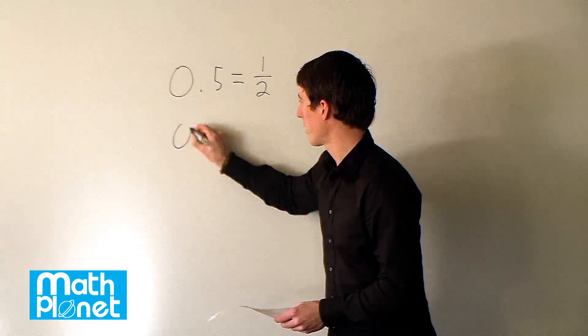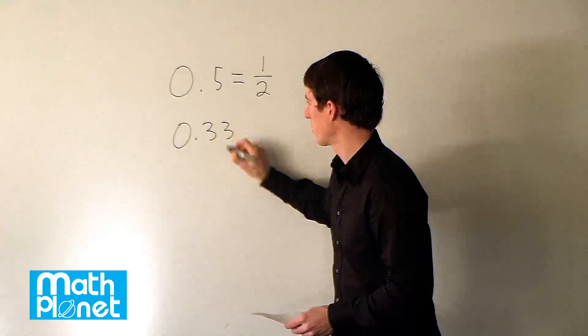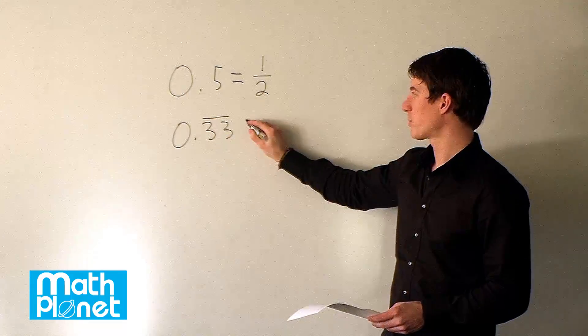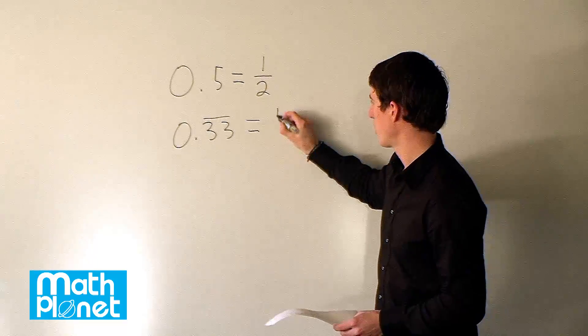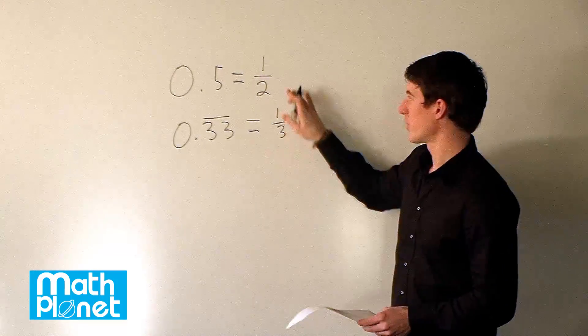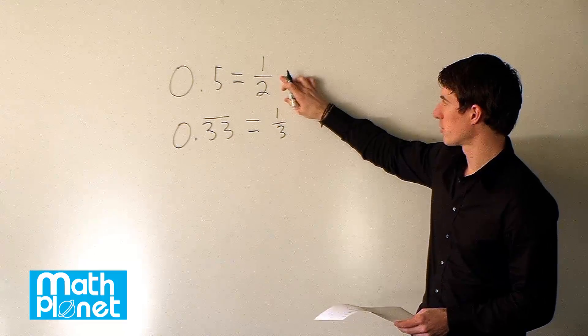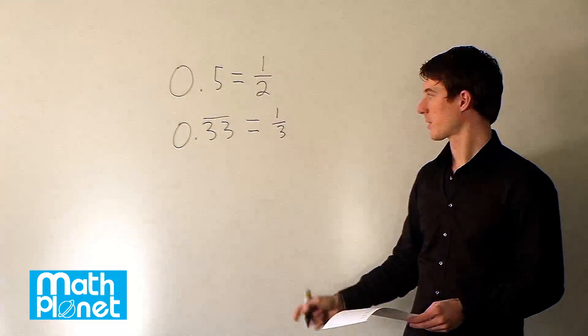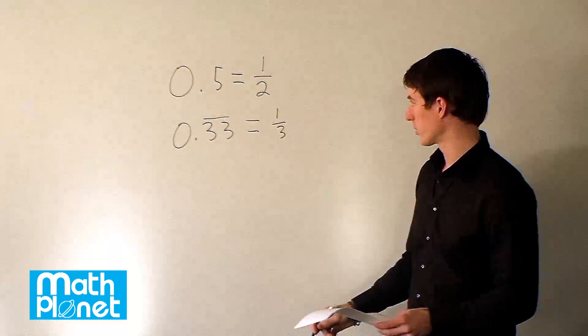Now what about 0.33 forever repeating? We sometimes just write that as 3 like that. Well that's a pretty common one as well, we know that to be 1 third. So these are rational expressions, rational numbers, numbers that are fractions where we divide by some number that we know exactly.